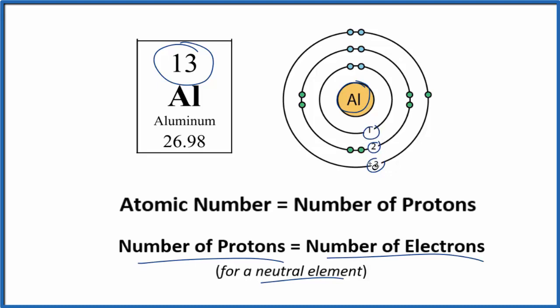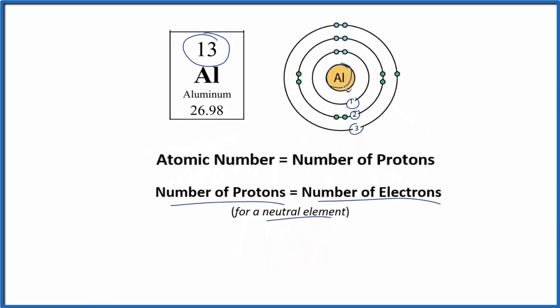For aluminum, we have three energy levels. Let's take a look at the periodic table and see how these electrons are distributed around the nucleus.